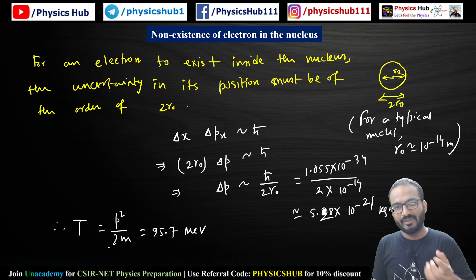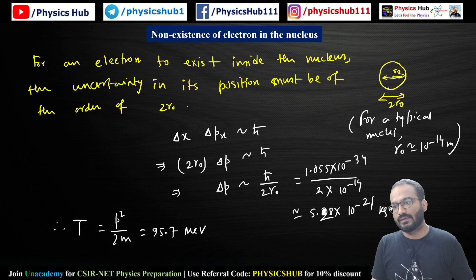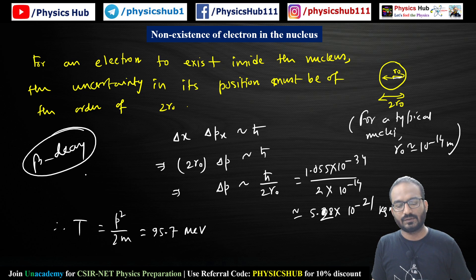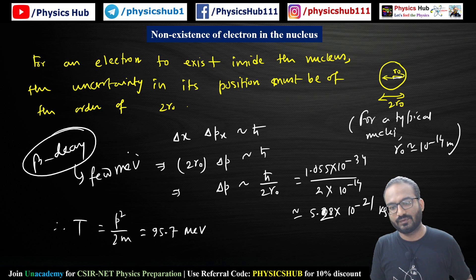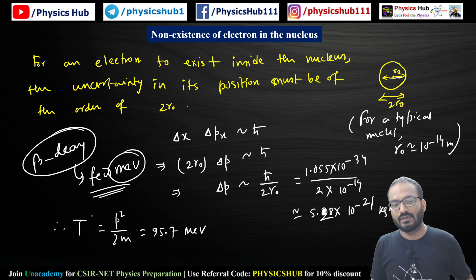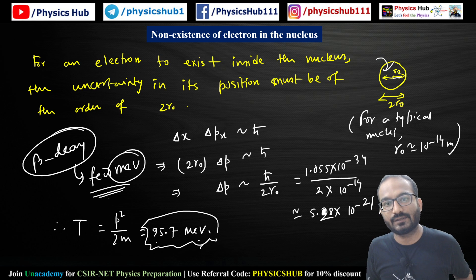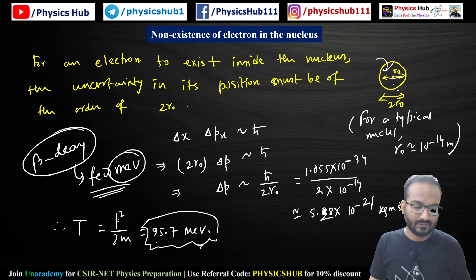Now in beta decay, we have the energy of the order of only a few MeV. Beta decay is basically an electron emission, and we get the energy of the beta particle of the order of a few MeV. But as per our calculation, if the electron has to exist inside the nucleus, its energy should be of the order of 9.95 MeV. That is why the electron cannot exist inside the nucleus.